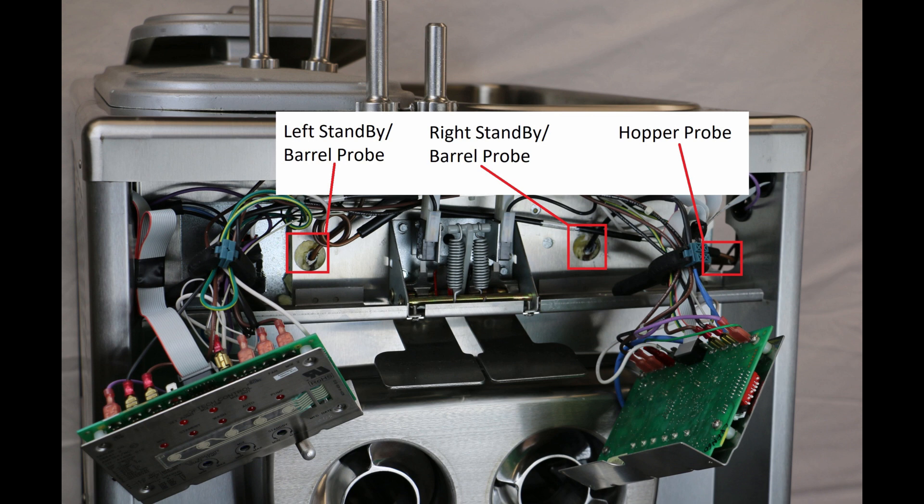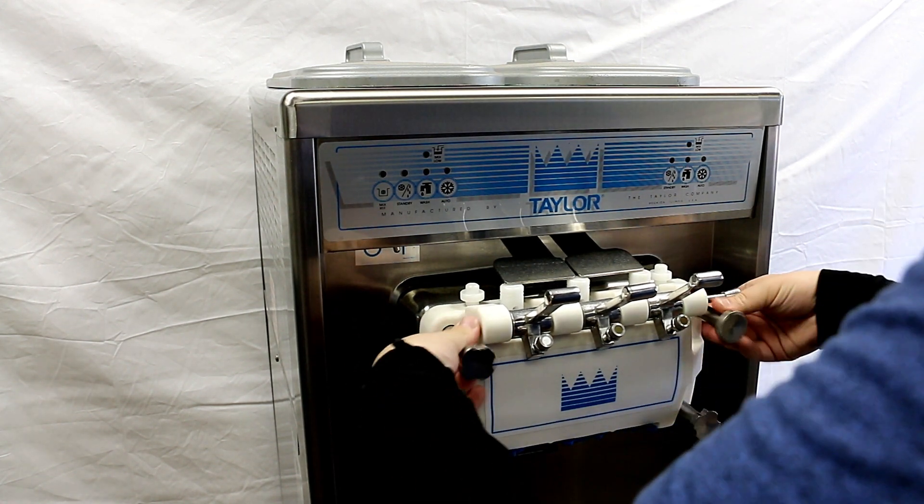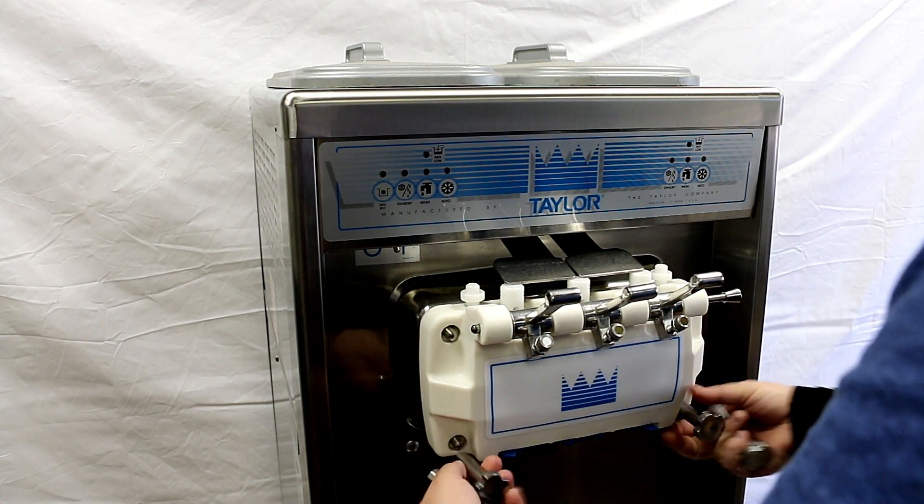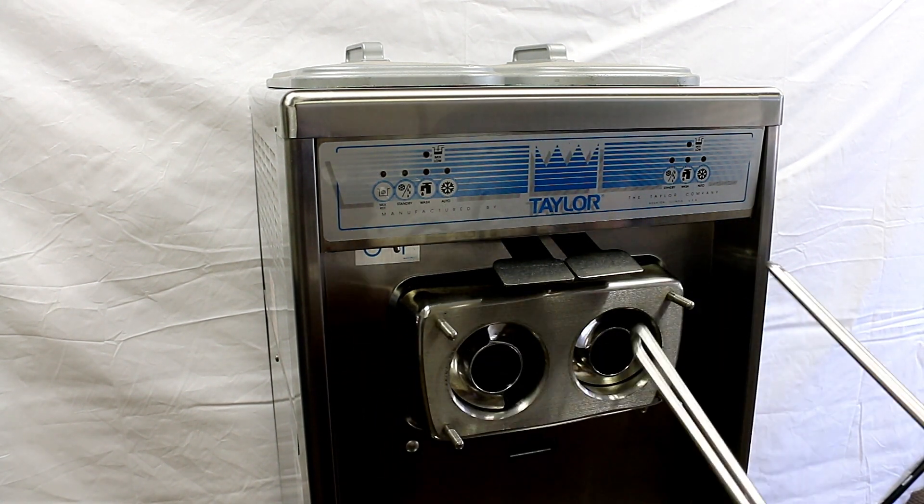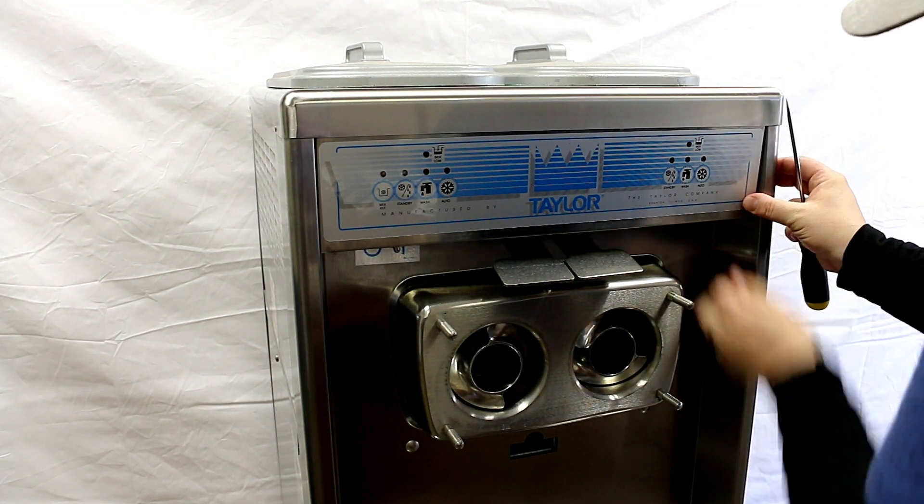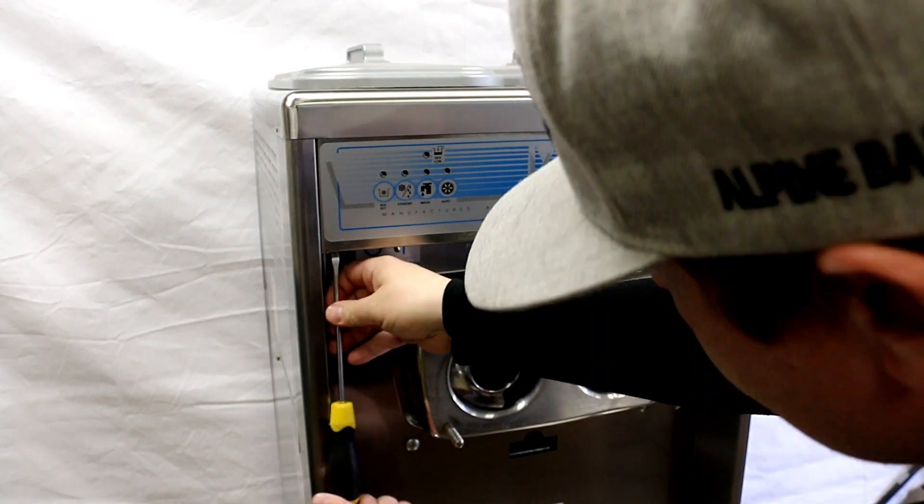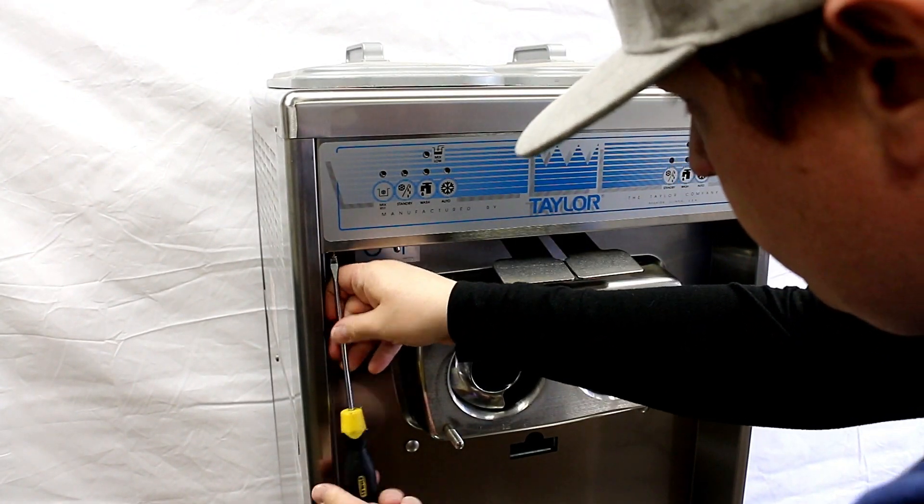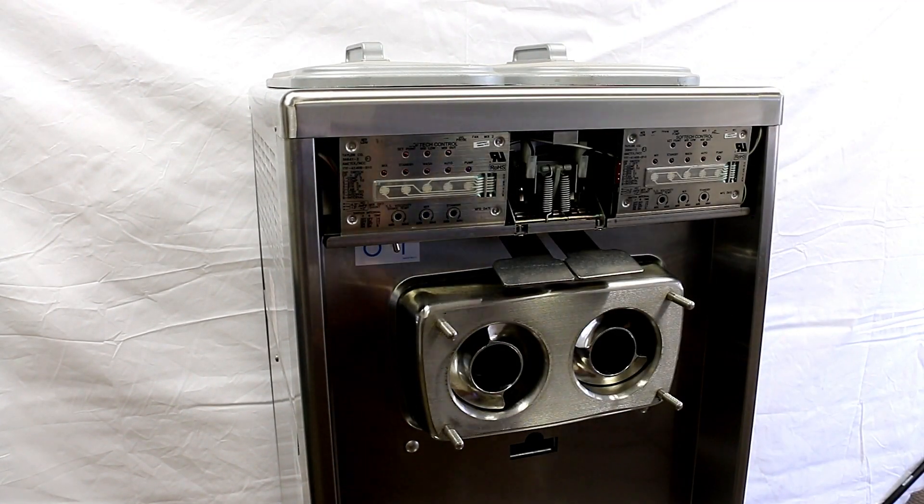This picture will show the location of all three and we'll start out right away with removing the freezer door. It's good to get this out of the way for this job and then we'll remove the cover that protects the logic boards of this machine. Once we get those things out of the way we'll remove the right side logic board since the right side barrel probe is located behind it.